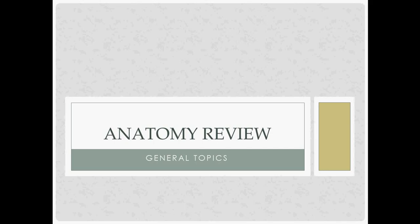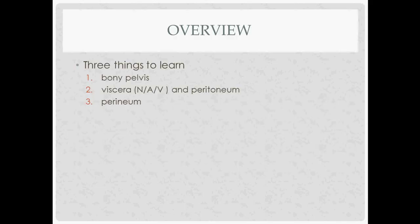This is the anatomy review for this section. There are three main things to go over: the bony pelvis, the viscera and organs, nerves, arteries, veins, the peritoneum, and then finally we'll wrap up talking about the perineum.